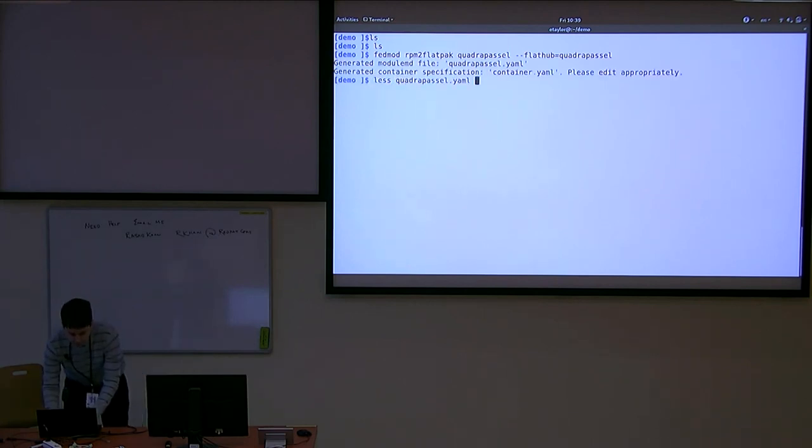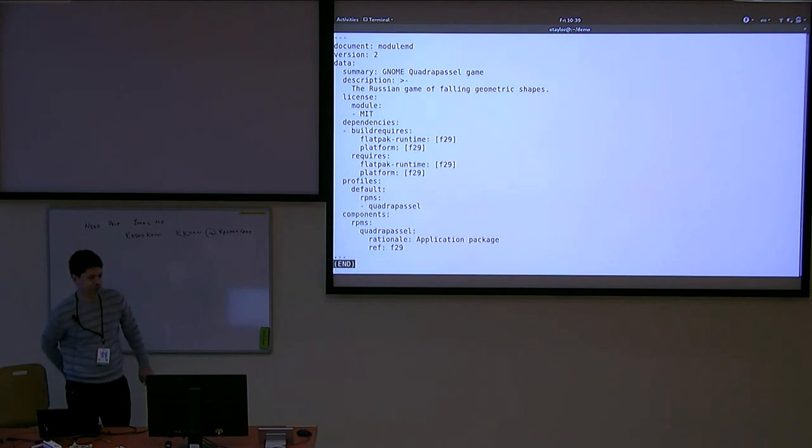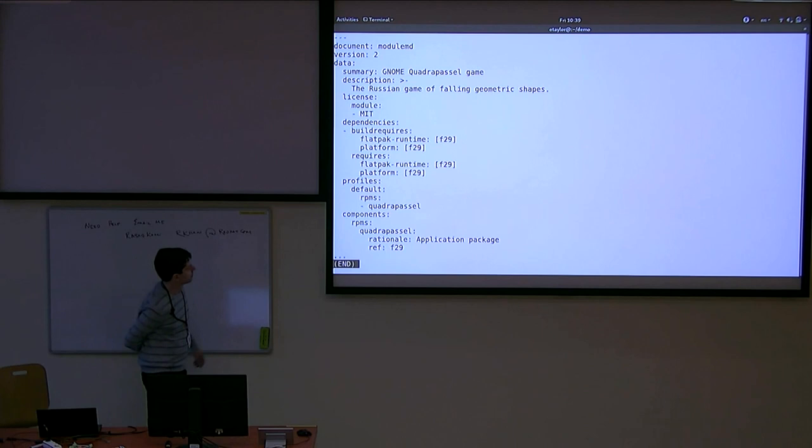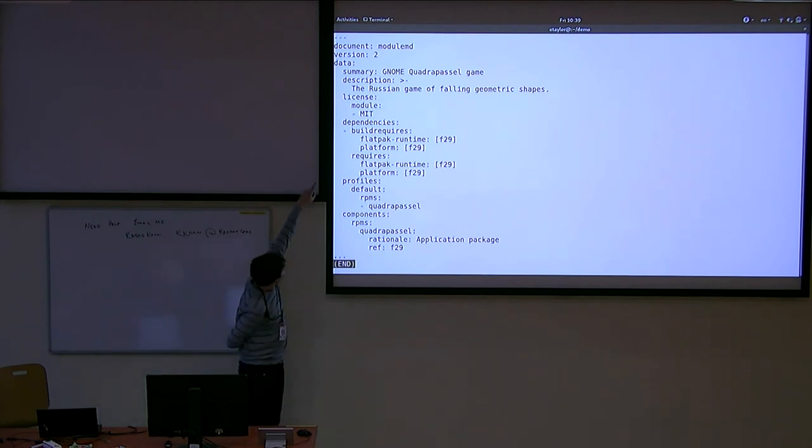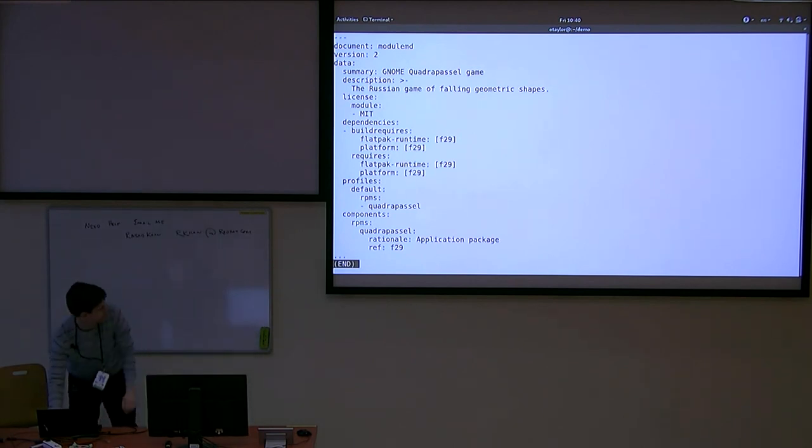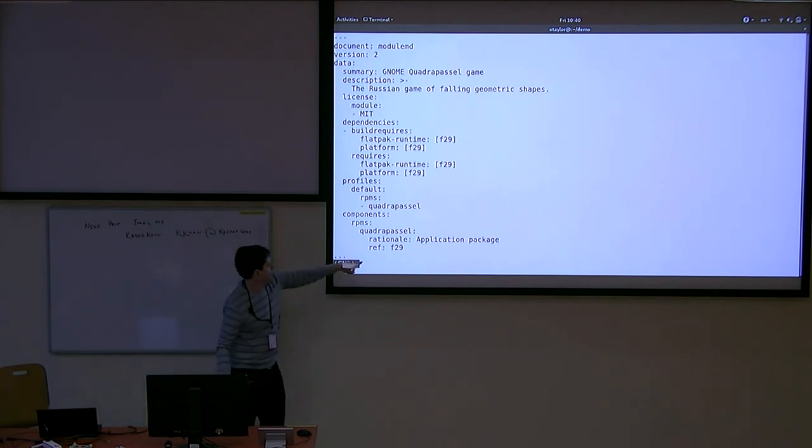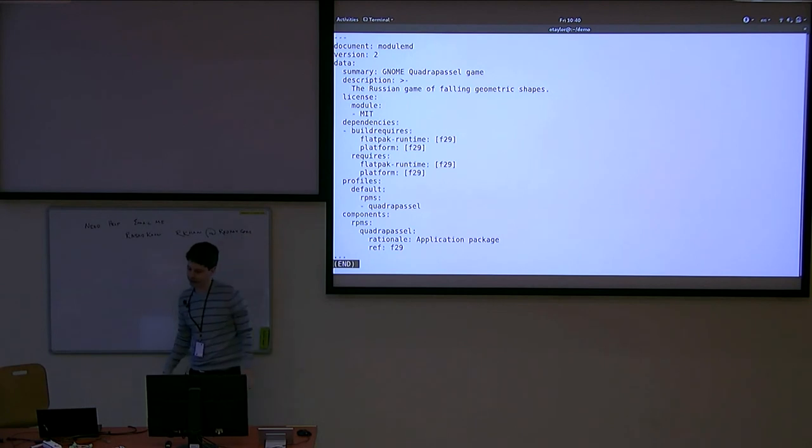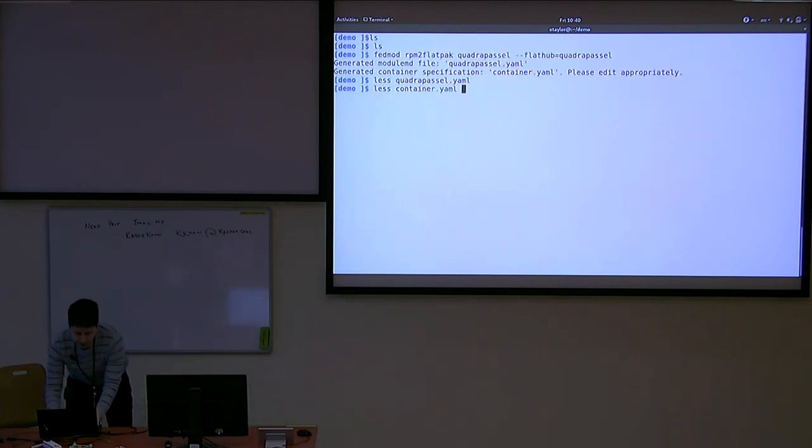This is the module metadata file. It's actually really very small. There's a description here which comes from the RPM spec file. This stuff is just basically boilerplate saying that it uses the Flatpak runtime module. Then there's a single RPM in this one, just the application itself. This by default is saying pull the Fedora 29 branch of Quadrapassel.